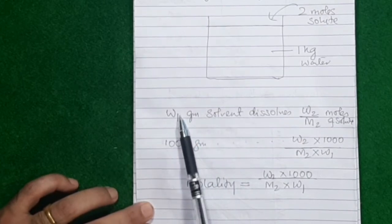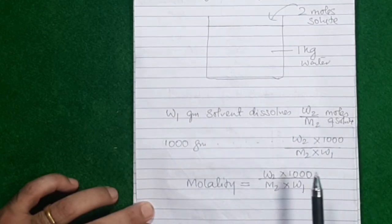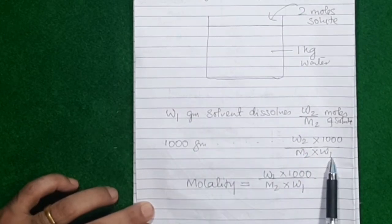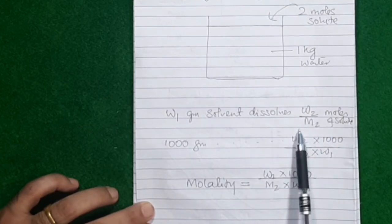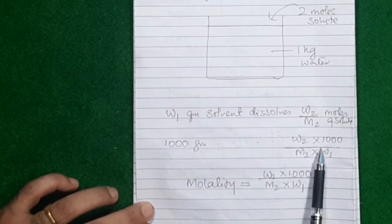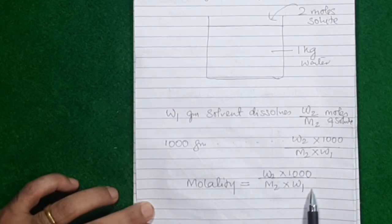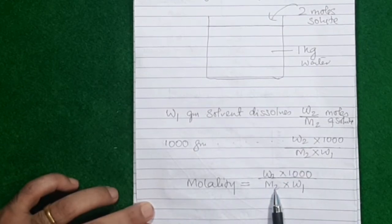I had w1 grams of solvent dissolving w2/m2 moles of solute. But the number of moles of solute per w1 grams is not molality — you need per 1000 grams. If w1 grams of solvent dissolves these many moles, then 1000 grams of solvent dissolves how many moles? By unitary method: divide by w1 and multiply by 1000. That gives moles per 1000 grams of solvent, which is molality.